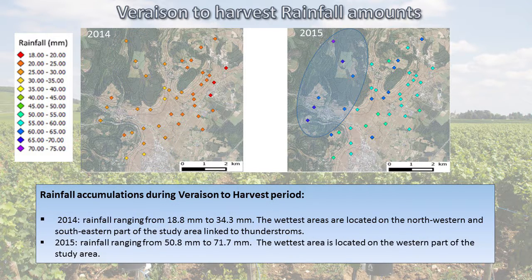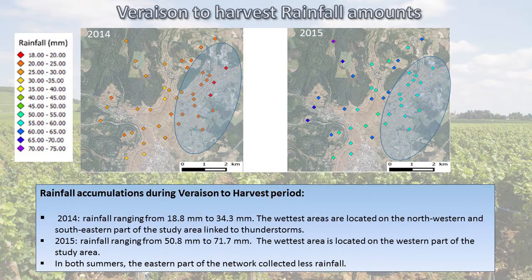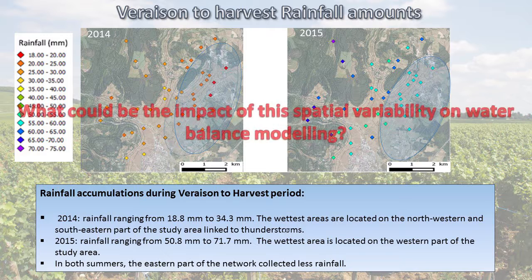For 2015, the wettest area is located on the western part with accumulations around 72 millimeters, and the driest part of the area registered about 51 millimeter accumulations. This is interesting because these strong accumulations are not linked to thunderstorms during the period. We can see that during the whole period, the eastern part of the network is generally drier than the western part, which shows more important rainfall accumulation.